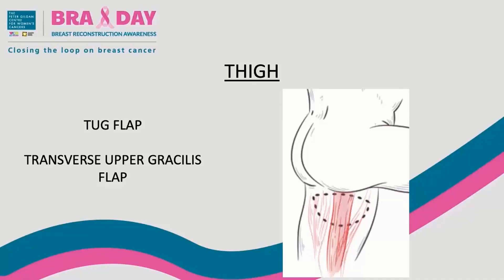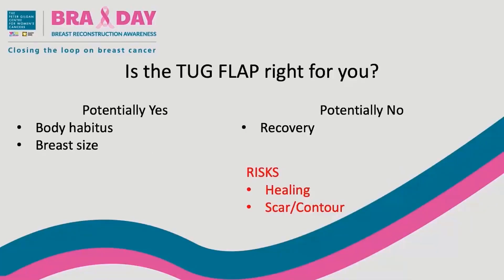Lastly, the thigh tissue can be used as a TUG flap, or transverse upper gracilis flap, where the inner thigh skin, fat, and gracilis muscle are harvested. The TUG flap is similarly more often used in slender women with the desire for smaller breasts. Since the tissue used is near the groin, the recovery can be more demanding with maintaining hygiene, and there are similarly risks of difficulty healing and dissatisfaction with the scar and resulting contour.